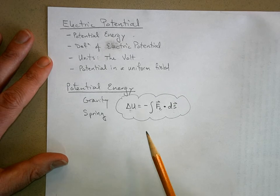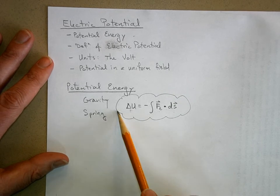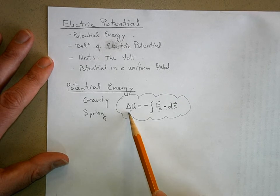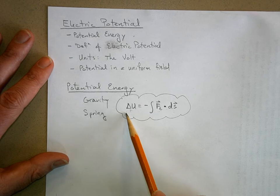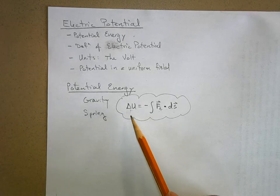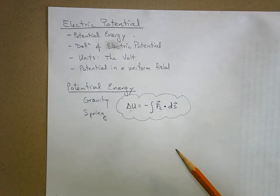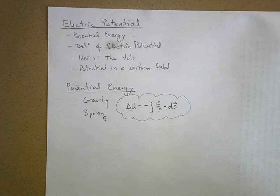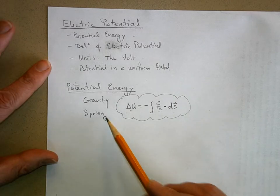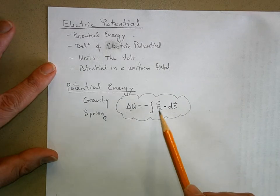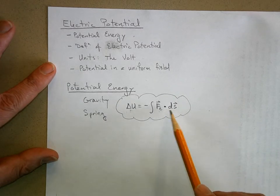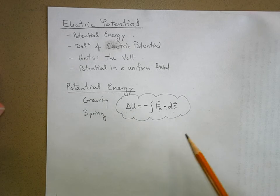This is the equation we used when talking about gravitational potential energy — in a uniform gravity field it turned out to be mgh, or in a planetary gravitational field where we defined zero to be infinitely far away and got negative GMm over r. With a spring, you put in negative kx and get one-half kx² as the potential energy of a compressed or stretched spring.